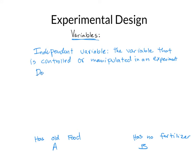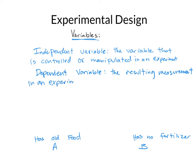Our dependent variable is the result — the variable that we are measuring as an effect of the independent variable. So what are we going to measure? There are two things we could measure, but let's say plant height. Plot A has old food, Plot B has no fertilizer, and we're going to measure plant height after two months. The dependent variable would be plant height.